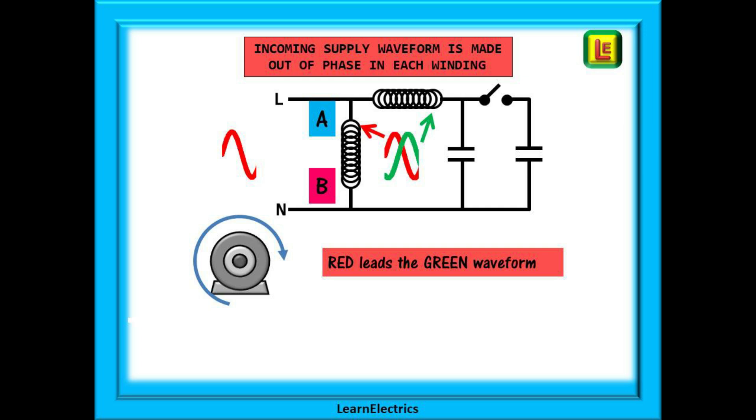By introducing a capacitor into just one winding we have now created two waveforms from one. In this example the red phase is leading the green phase and this imbalance causes the rotor to begin to rotate. For now just notice the positions of the A and B boxes on the drawing. Once the rotor is rotating it will continue to do so as long as the electrical supply is maintained.